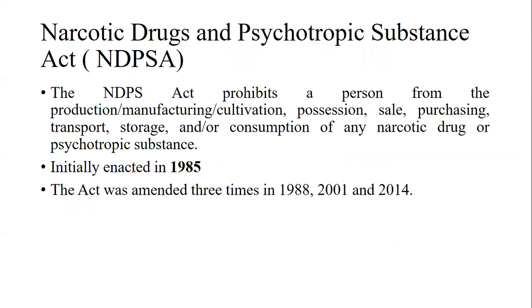The Narcotic Drugs and Psychotropic Substances Act prohibits a person from the production, manufacturing, cultivation, possession, sale, purchasing, transport, storage, and consumption of any narcotic drug or psychotropic substance.